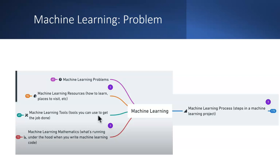Machine learning involves ML problems, resources, tools, mathematics, and processes. For tools, we can use Python, many available algorithms, Kaggle, Google Colab, GitHub, and RapidMiner — all very handy. The mathematics runs under the hood when you write code, providing the logic behind the algorithms.